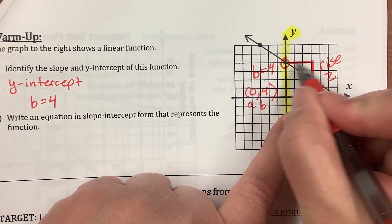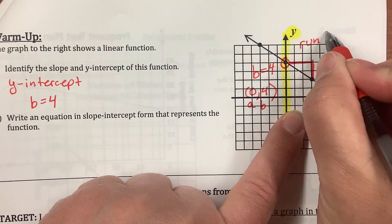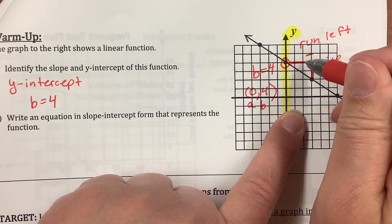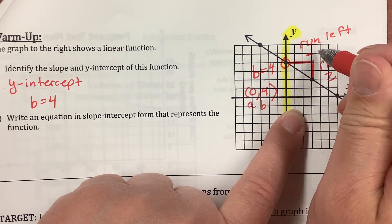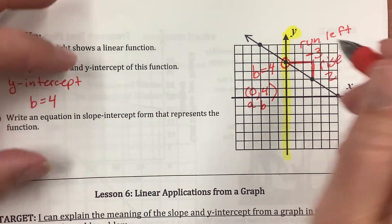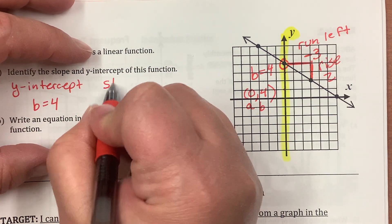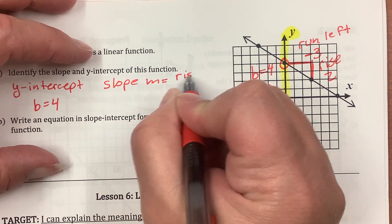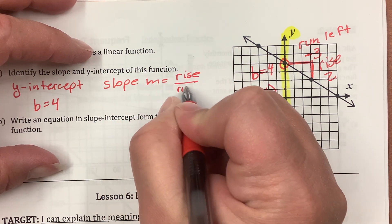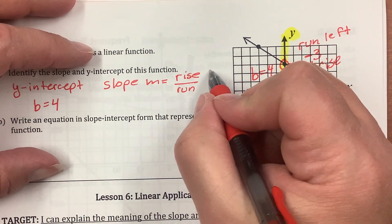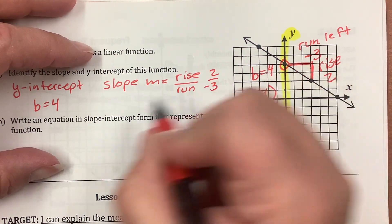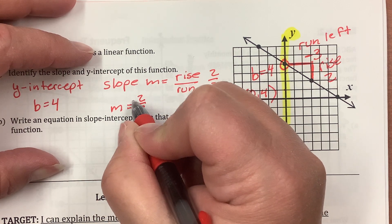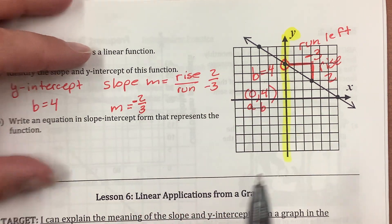Run, my run is left, and when you run left, it's negative, negative 1, 2, 3. Rise over run, so slope m equals rise over run, and in this case, it's 2 over negative 3. So now I know my m is negative 2 over 3.